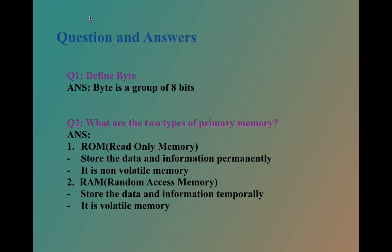The second question, what are the two types of primary memory? The answer is, first one, that is ROM, read only memory. Store the data and information permanently. It is non-volatile memory. The second one, RAM, random access memory.